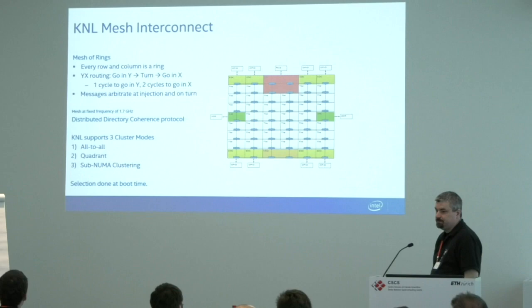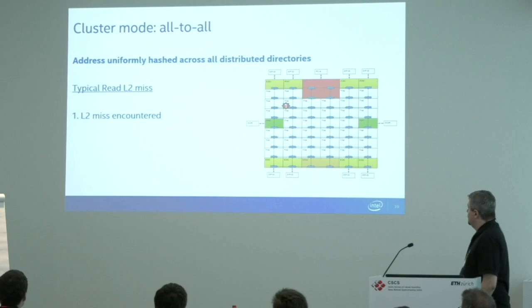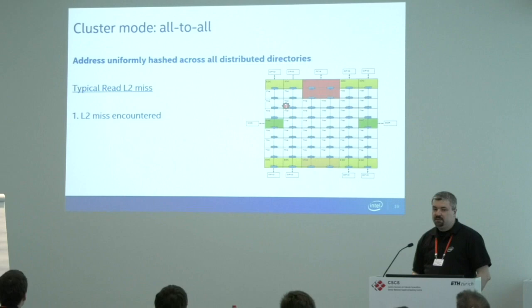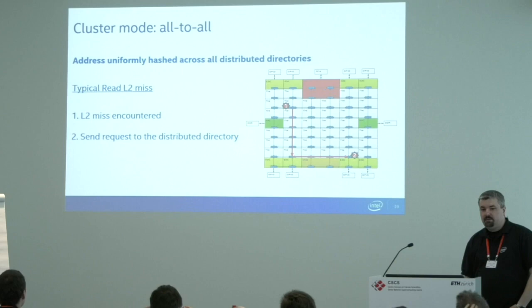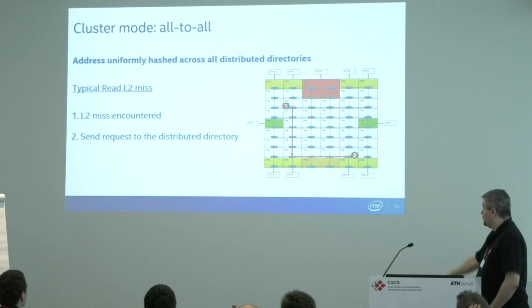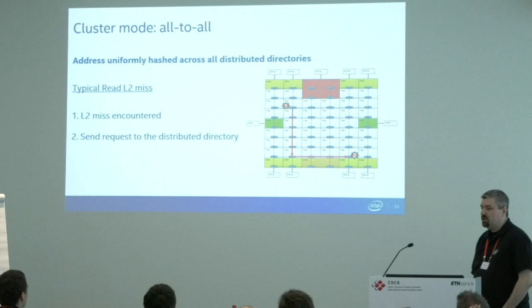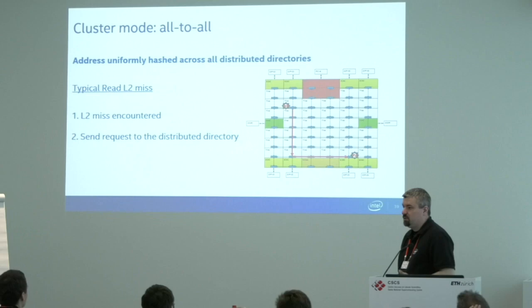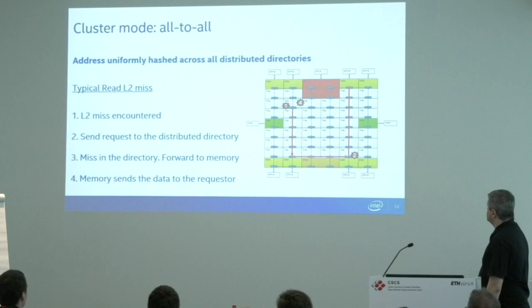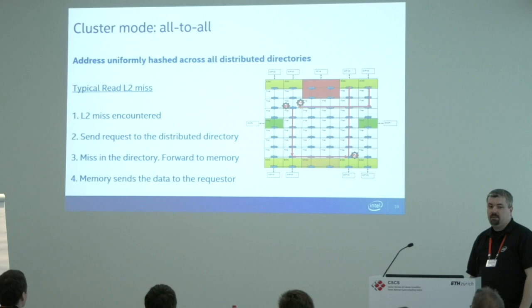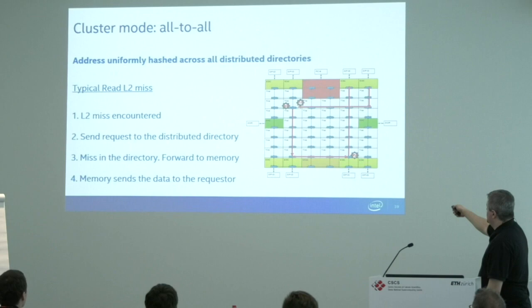In all-to-all mode: suppose we're sitting on a tile and have an L2 miss and need data from MCDRAM. We first go in Y direction to locate the tag directory row for that data across the chip, ask that tile if the cache line is anywhere on chip and which memory controller owns it, then talk to the memory controller, do the read, and transfer back. In this case we travel along the whole chip.